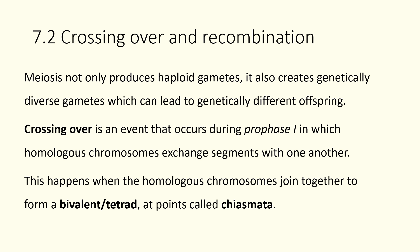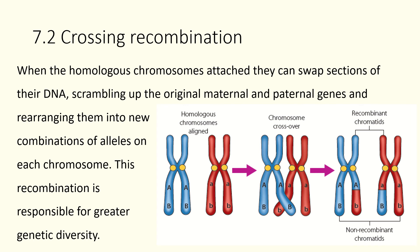Now for crossing over and recombination — essentially one process. During prophase one, homologous chromosomes come together and form a bivalent or tetrad, sticking together at points known as chiasmata. At these chiasmata, sections of DNA can switch between homologous chromosomes — this is crossing over. If we think of blue as the father's DNA and red as the mother's, sections move from one homologous chromosome to the other.